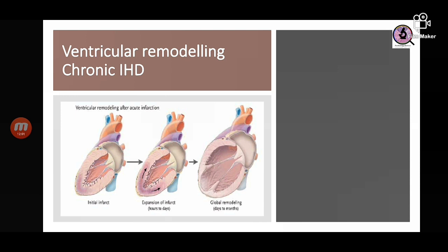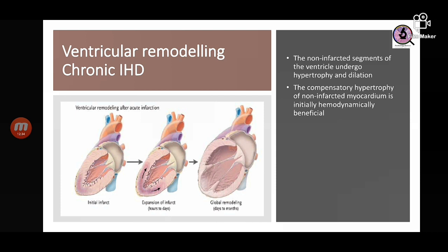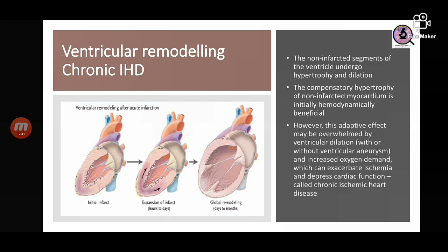Long-term changes seen after obstruction of the coronaries are called chronic ischemic heart disease, also referred to as ventricular remodeling. This concept is associated with the remaining non-infarcted myocardium. The non-infarcted segments undergo hypertrophy and dilatation to compensate for the infarcted myocardium. Initially this hypertrophy is beneficial as contractile power increases; however, dilatation increases oxygen demand and can exacerbate ischemia.